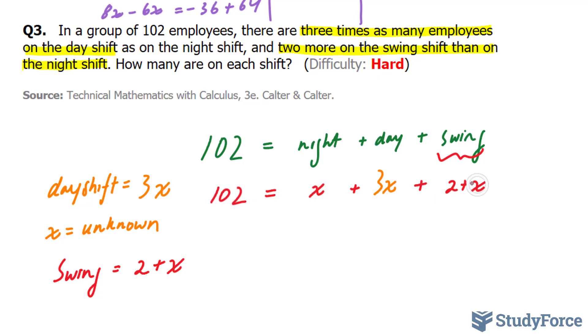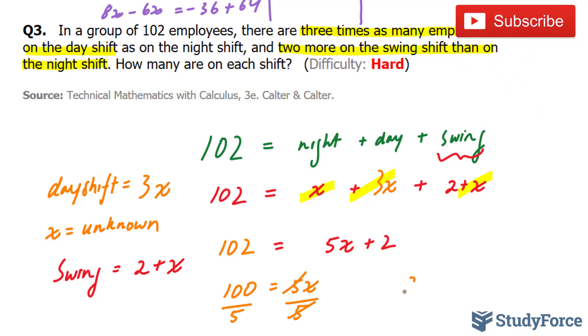Now, we have to collect like terms. We have 1x plus 3x plus another 1x, and that gives us 5x plus 2. I just collected like terms. Bringing this 2 over makes it 100 on the left side, 5x on the right side.